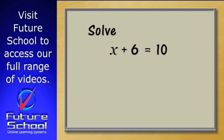OK then, I've already told you that we have to keep both sides of the equation equal to each other. What we need to do is work out how to get the X alone on one side.